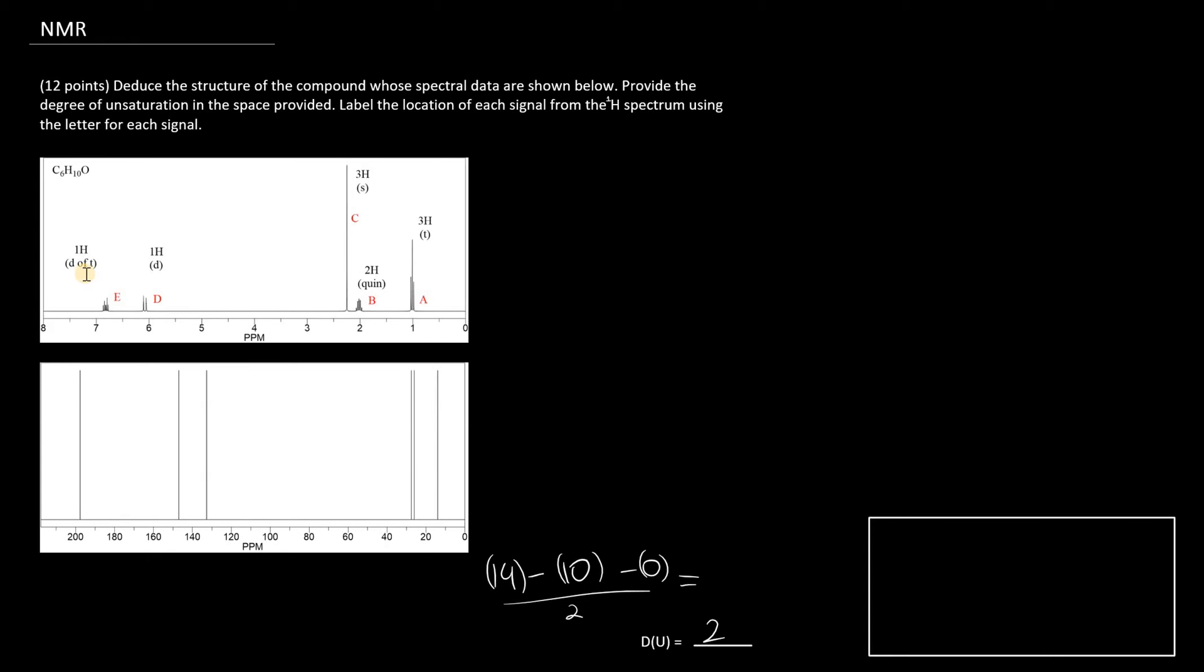We have complex splitting, so that's evidence for an alkene. And if we look right here at this peak, it's very characteristic of a carbonyl, close to 200 parts per million.